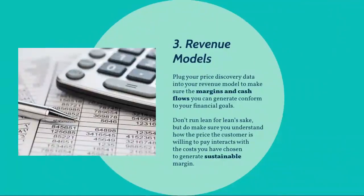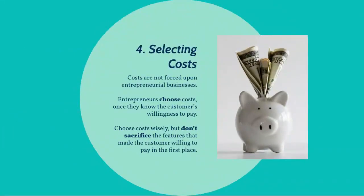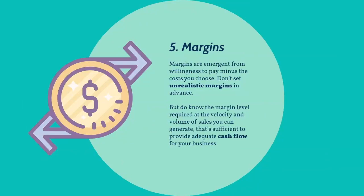Three: plug your price discovery data into your revenue model to make sure the margins and cash flows you can generate conform to your financial goals. Don't run lean for lean's sake, but do make sure you understand how the price the customer is willing to pay interacts with the costs you have chosen to generate sustainable margin. Four: costs are not forced upon entrepreneurial businesses — entrepreneurs choose costs once they know the customer's willingness to pay. Choose costs wisely, but don't sacrifice the features that made the customer willing to pay in the first place. Five: margins are emergent from willingness to pay minus the cost you choose. Don't set unrealistic margins in advance, but do know the margin level required at the velocity and volume of sales you can generate that's sufficient to provide adequate cash flow for your business.